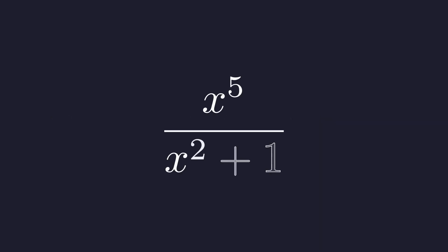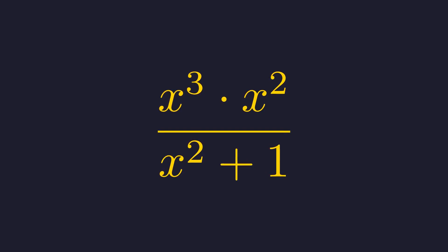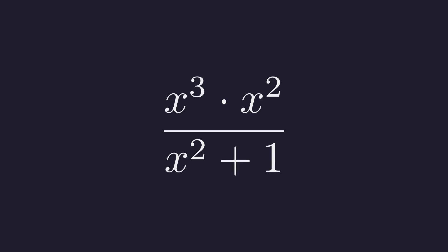Start with our fraction x to the fifth over x squared plus 1. Notice we can rewrite x to the fifth as x cubed times x squared, giving x cubed times x squared over x squared plus 1. Now here's the trick: write x squared as x squared plus 1 minus 1.